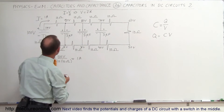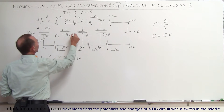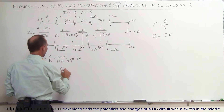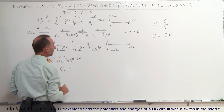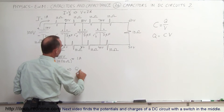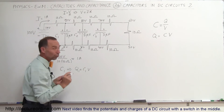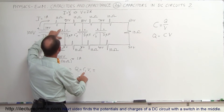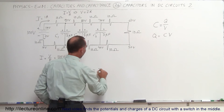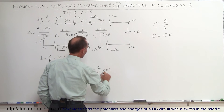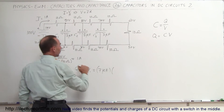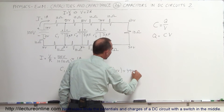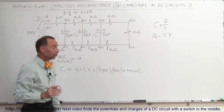In the case of the first capacitor — let's call it C1 — the charge Q1 is equal to C1 times the voltage across that capacitor V1. The capacitance is 7 microfarads, and the voltage across it is 90 minus 20, or 70 volts. That gives 490 microcoulombs, which is the charge on the first capacitor.